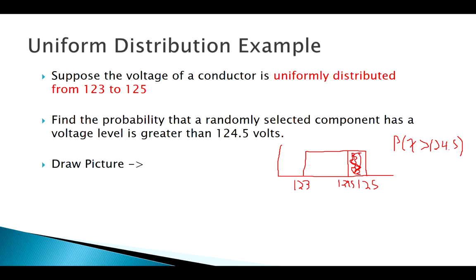Now since the uniform is easy to work with, I can just visualize this. From 123 to 125, this is 2. From 124.5 to 125, that's 0.5. So that's really a quarter of the area, or 0.25. Intuitively that makes sense. You're just using some pretty simple geometry there.